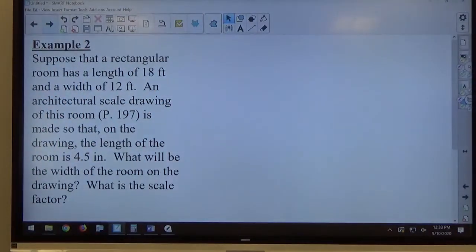Okay, example two. Suppose that a rectangular room has a length of 18 feet and a width of 12 feet. An architectural scale drawing of this room, page 197, is made so that on the drawing, the length of the room is 4.5 inches. What will be the width of the room on the drawing? What's the scale factor?